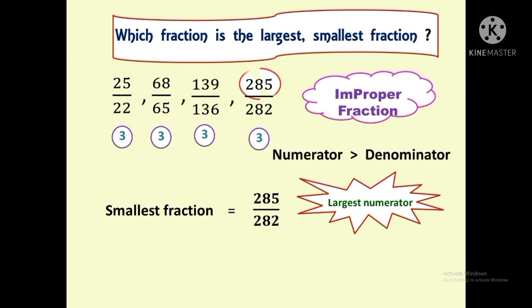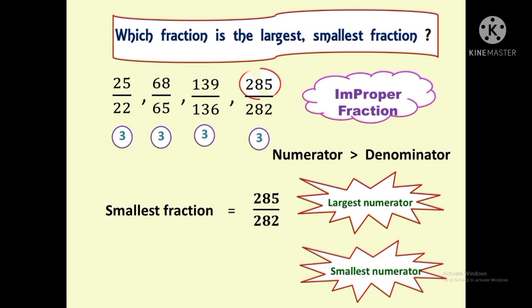We can apply this trick only when the difference between the numerator and denominator is the same. Now we have found the smallest fraction. To find the largest fraction, we have to find the smallest numerator among these fractions. The smallest numerator is 25, so the largest fraction is 25 by 22. To summarize Type 1: if fractions are improper and the differences are the same, find the largest numerator for the smallest fraction, and find the smallest numerator for the largest fraction.